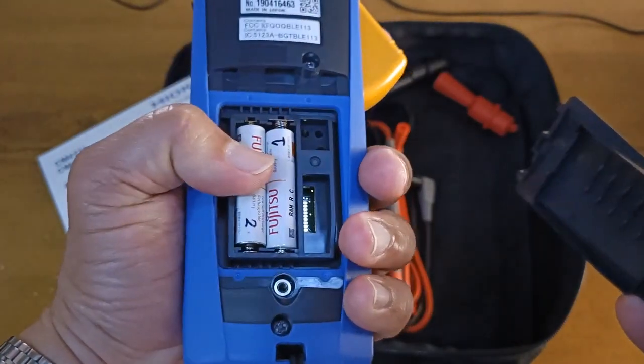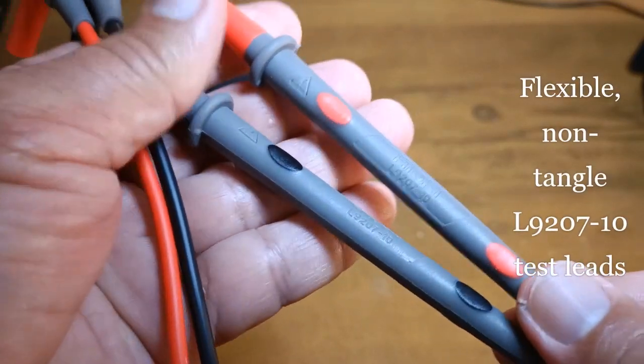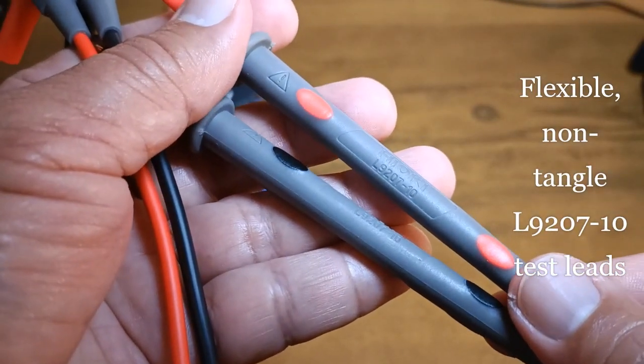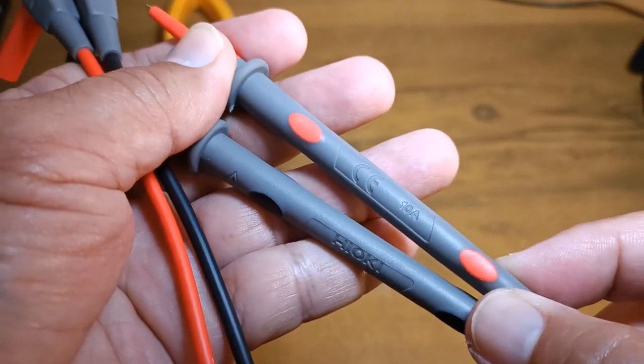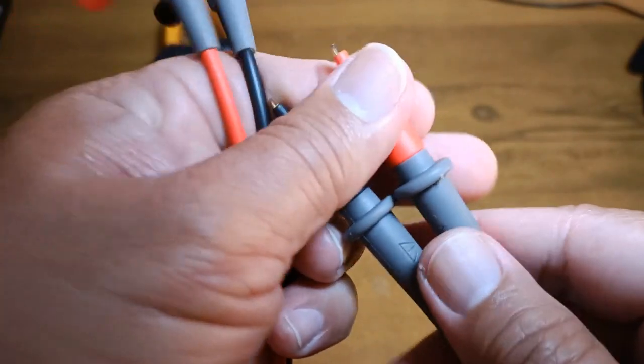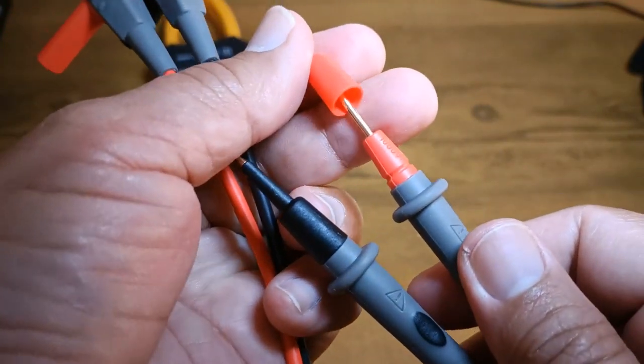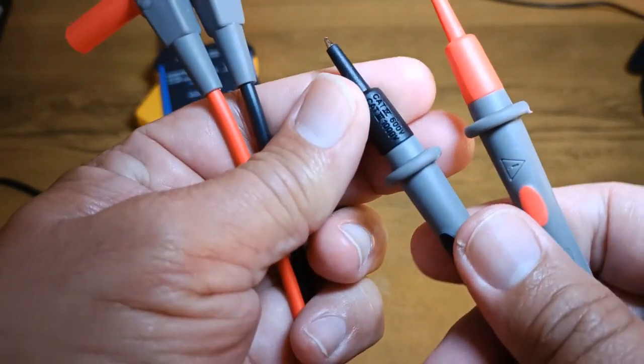The Hioki CM4376 is powered by two AAA-sized alkaline or rechargeable batteries. The test leads included is a pair of L9207-10 Hioki branded test leads, rated at 10 amperes with removable tip covers that allows the instrument to be used at different measurement categories.